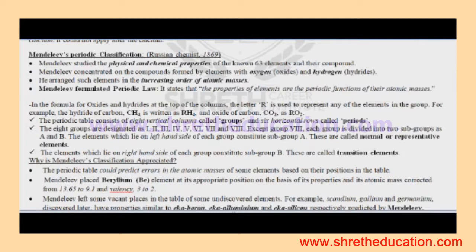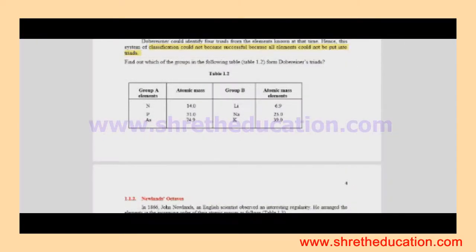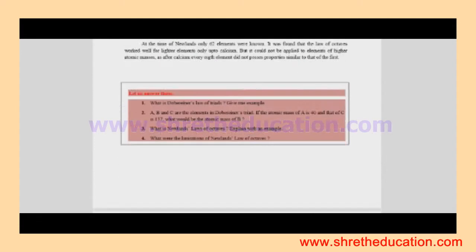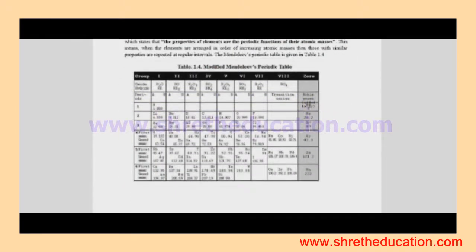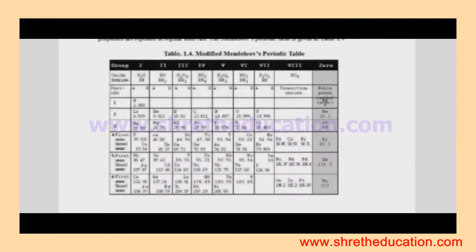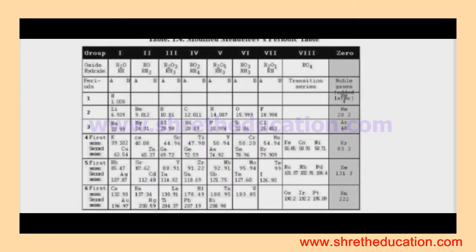He looked at the oxide and hydride forms of elements. He placed them in a periodic table. The oxide and hydride formulas are seen in the periodic table.